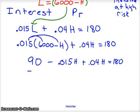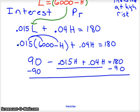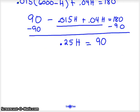Now I'm going to move this 90 over because I want to get it on the other side. And we're going to combine these two terms here in the middle. So negative 0.015 plus 0.04H is going to be 0.025H equals 180 minus 90 is 90. Then your high risk, the amount invested in your high risk is going to be 90 divided by 0.025 or $3,600.